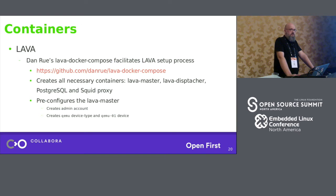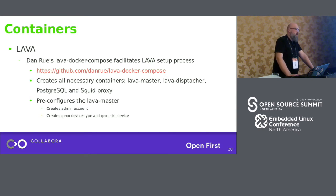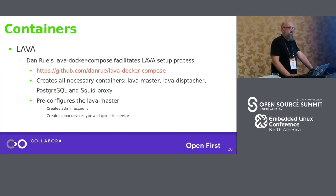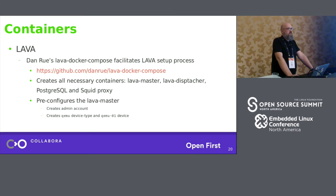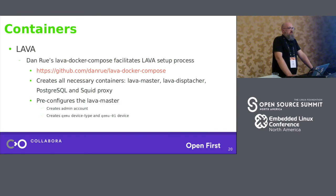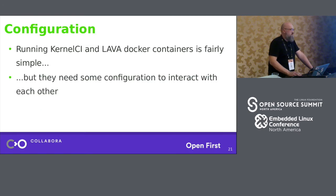There is also a set of containers for LAVA — not official LAVA containers, but based on them. Dan Rue, also a kernel CI developer, created Docker Compose files that take LAVA master, LAVA slave, and all necessary proxy and database packages, wrap them in one thing, and let you install the LAVA environment with a single command. It pre-configures the LAVA master for you: it creates the admin account, the virtual QEMU device type, and the QEMU device instance. So you start with LAVA running and the QEMU device already configured.